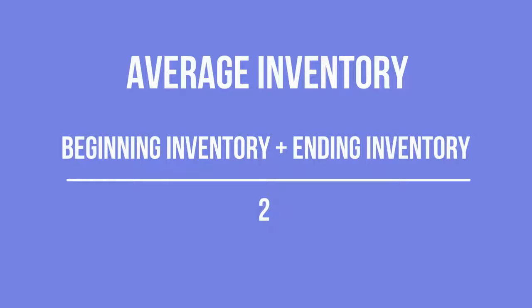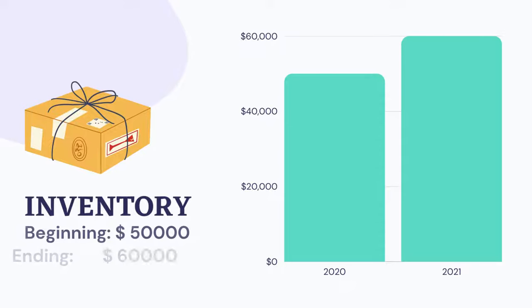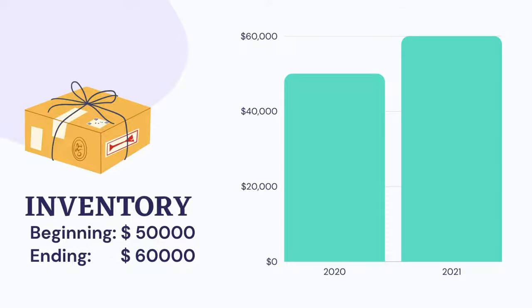Let's apply this formula to a practical example. Let's say the company sales for last year were $125,000 at a 45% margin. Beginning inventory was $50,000 and ending inventory was $60,000.